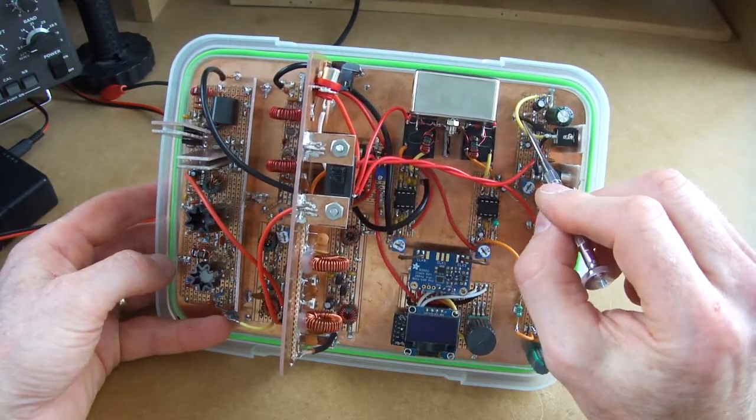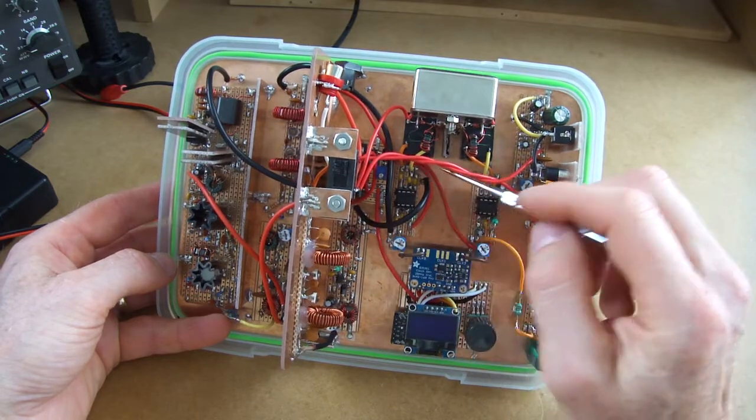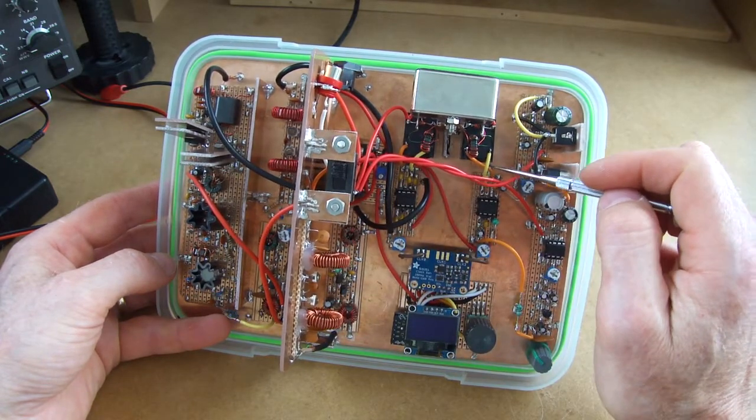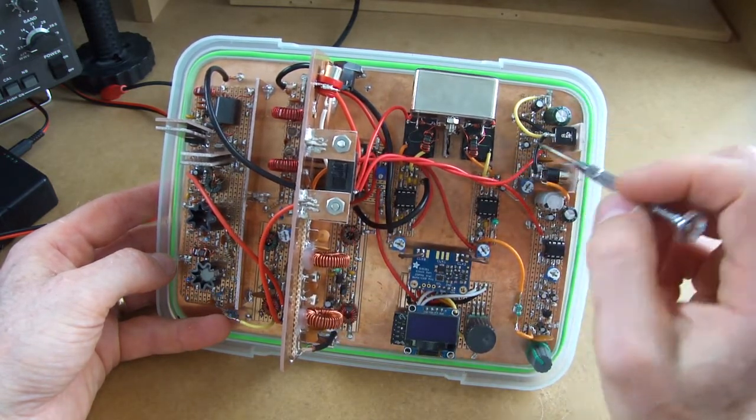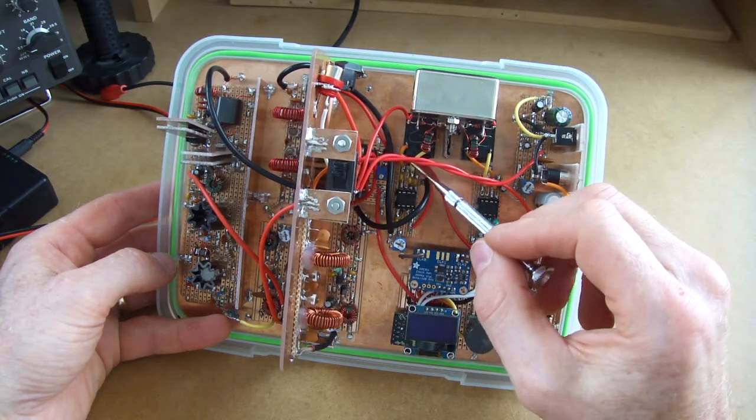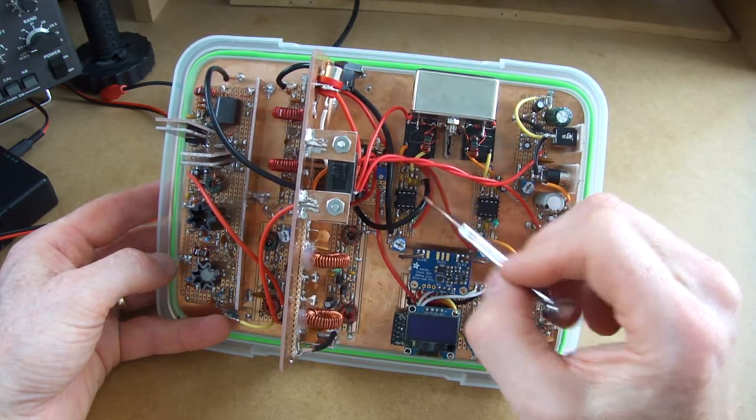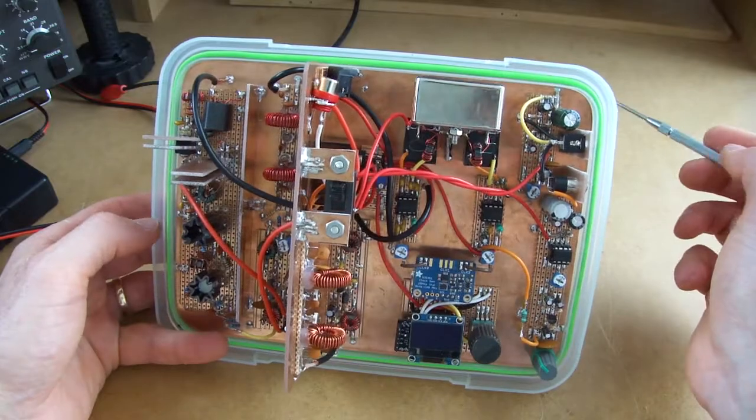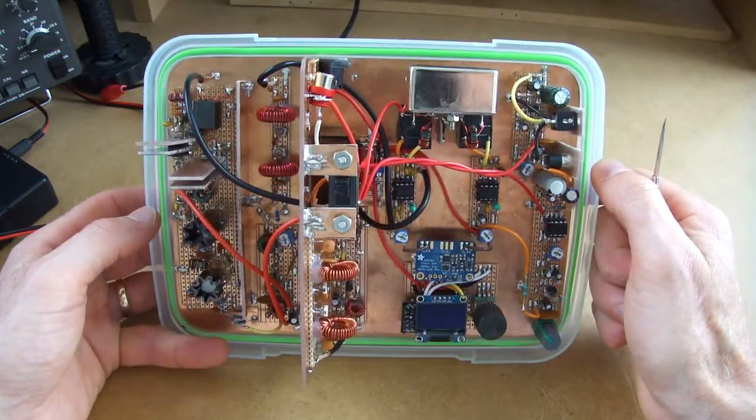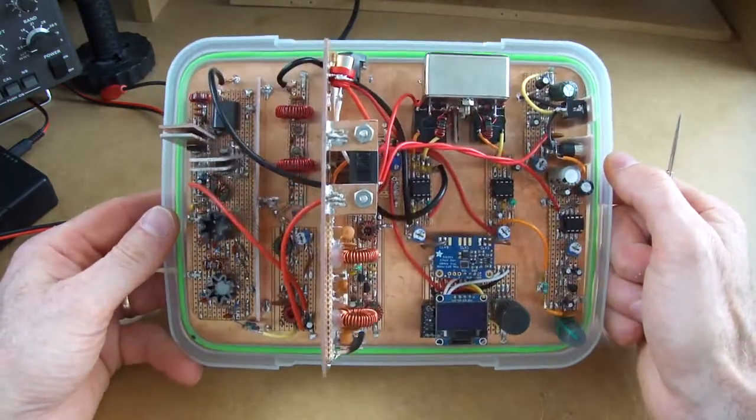The colour codes there are very much a nod to, again, Pete Giuliano and his colour scheme. I've sort of adopted myself. Orange for receive and yellow for transmit. So wherever you see yellow, it's something to do with a transmit side of the house and orange is for receive.